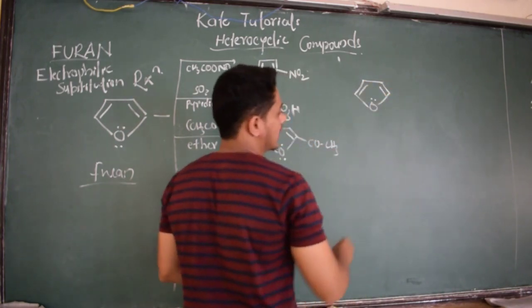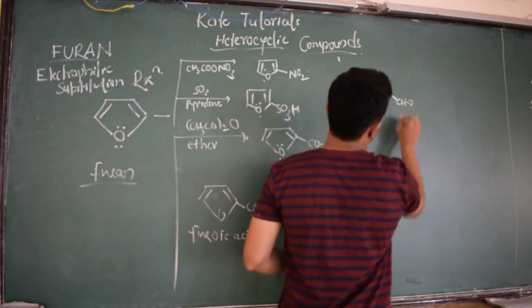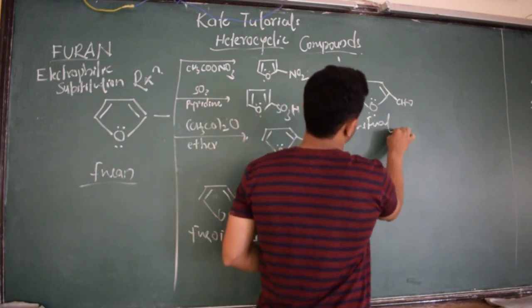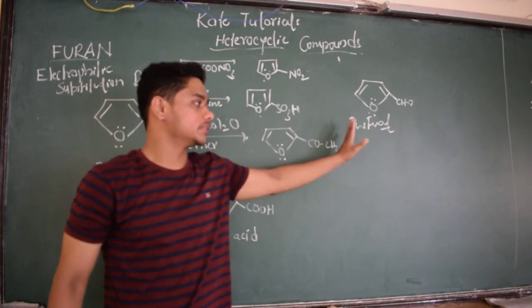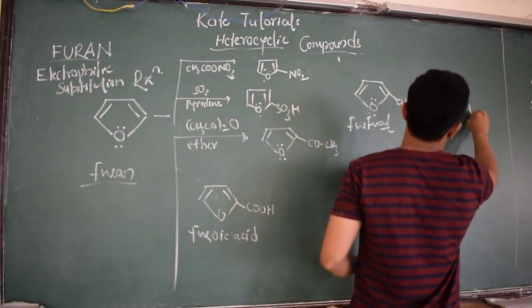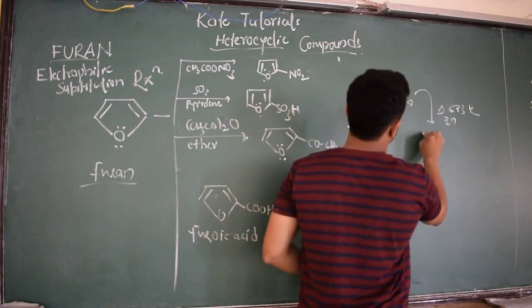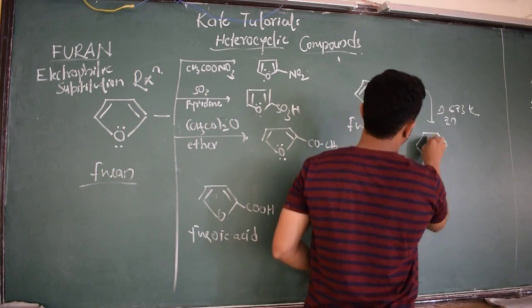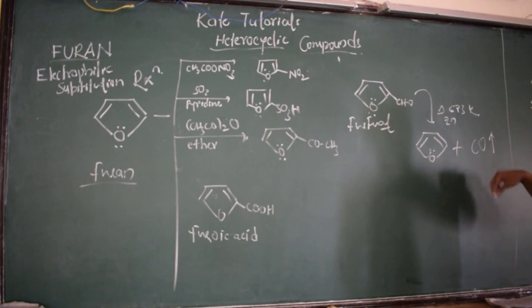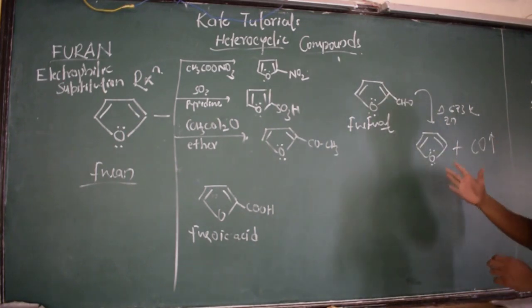Consider this - this is furan. If I replace this hydrogen by CHO then it is furfural, or aldehyde group CHO. If I heat it at 673 Kelvin in presence of zinc as a catalyst, I am going to get furan. We are going to get furan and carbon monoxide will be released out. In this way we can synthesize furan.